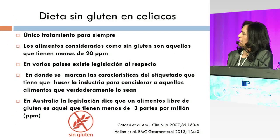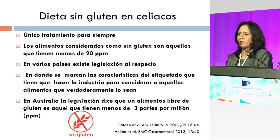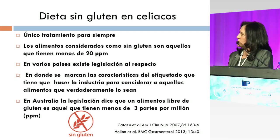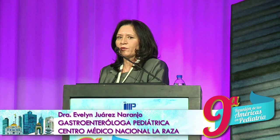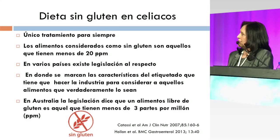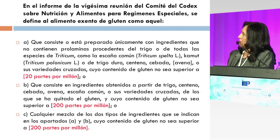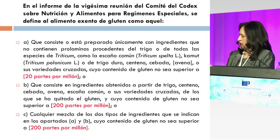Sabemos que la dieta sin gluten es el único tratamiento y para siempre de los celíacos. Una de las características que debe tener esta dieta es que debe contener menos de 20 partes por millón, es decir, menos de 20 miligramos por kilo del producto. En varios países está bien legislado esto. Aquí en México hay aparentemente problemas: hay asociaciones de celíacos que aún no están reconocidas, que no reciben apoyos y que en forma autónoma están tratando de que la industria de los alimentos libres de gluten sea revisada adecuadamente. En Australia la legislación dice que un alimento libre de gluten debe tener menos de tres partes por millón. El Códex de Sobrenutrición y Alimentos para Regímenes Especiales en México considera que un producto libre de gluten va a ser aquel que tenga menos de 20 partes por millón.